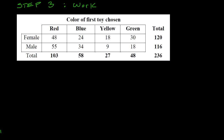Now let's find our chi-squared. The formula is: chi-squared equals the observed value minus the expected value, squared, all divided by the expected value. All the values in the chart are the observed values, so we just need to find the expected values.